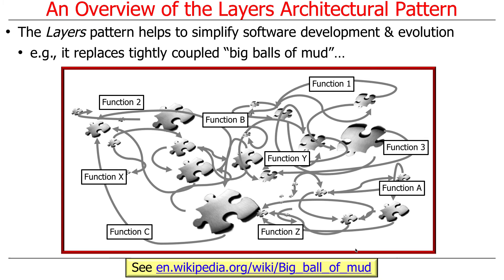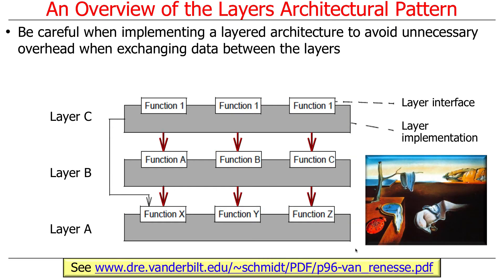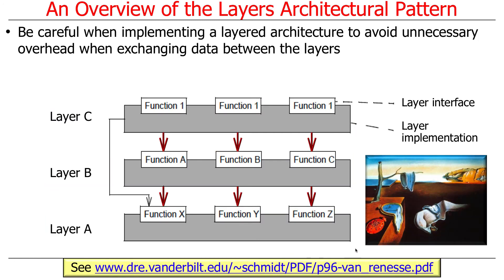What you want, instead of big balls of mud with functions strewn everywhere, is something more modular — modular that supports extension and contraction, so you can make changes up and down the layers. This all sounds fine in theory; when practiced, it's a little tricky. The tricky part is that if you're not careful, you can end up with a lot of overhead moving stuff back and forth between the layers. That's one reason why in layered architectures you'll often see a higher layer skip an intermediate layer and talk directly to a lower layer, almost always for performance reasons.